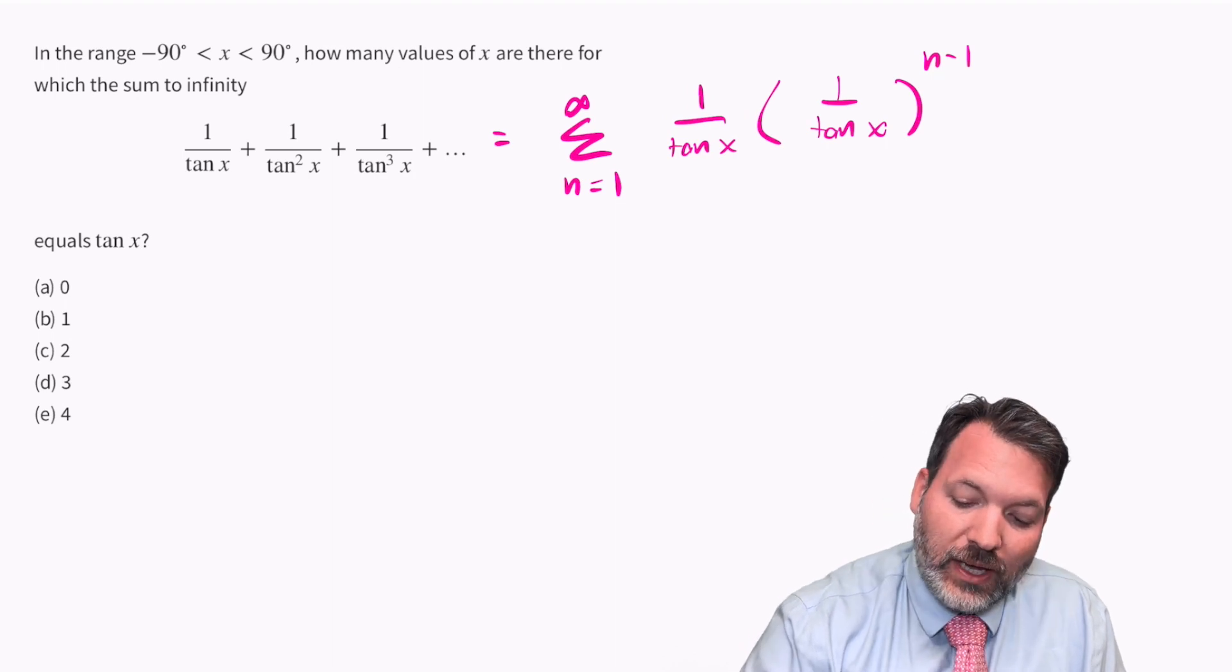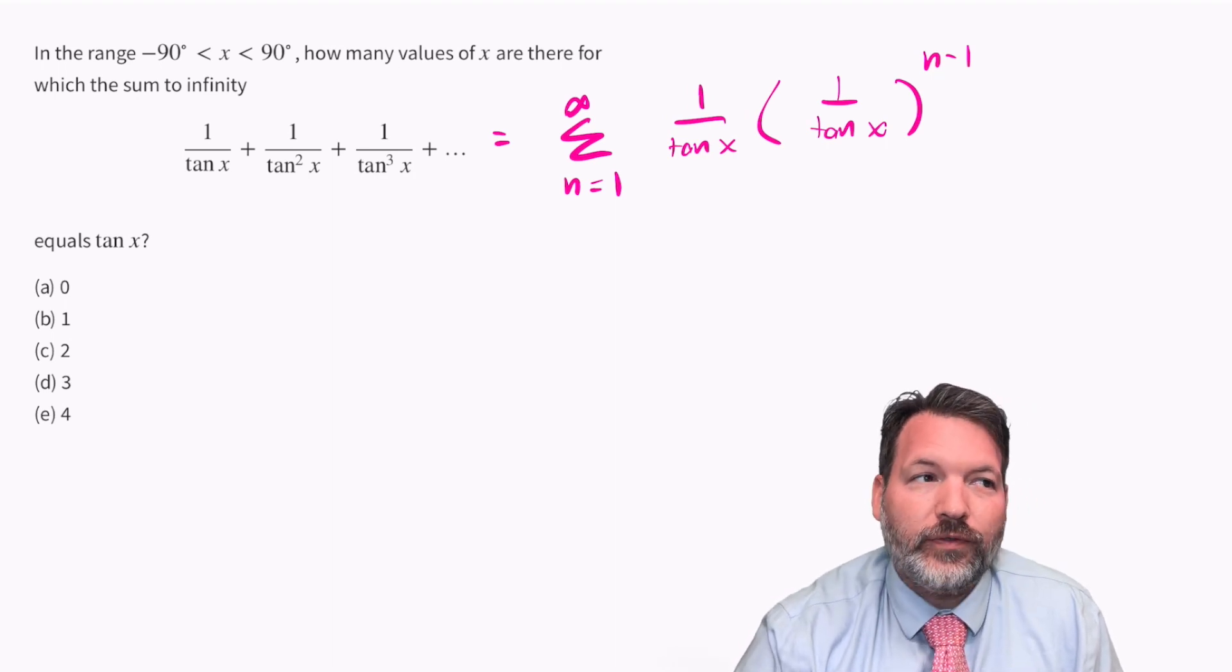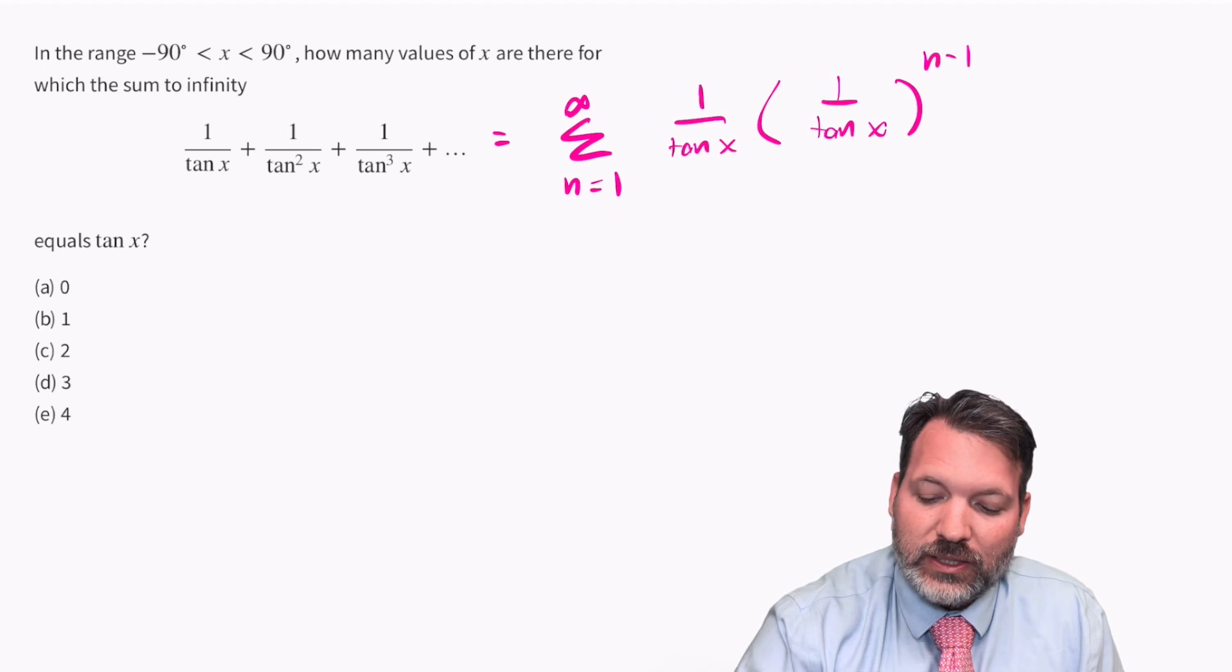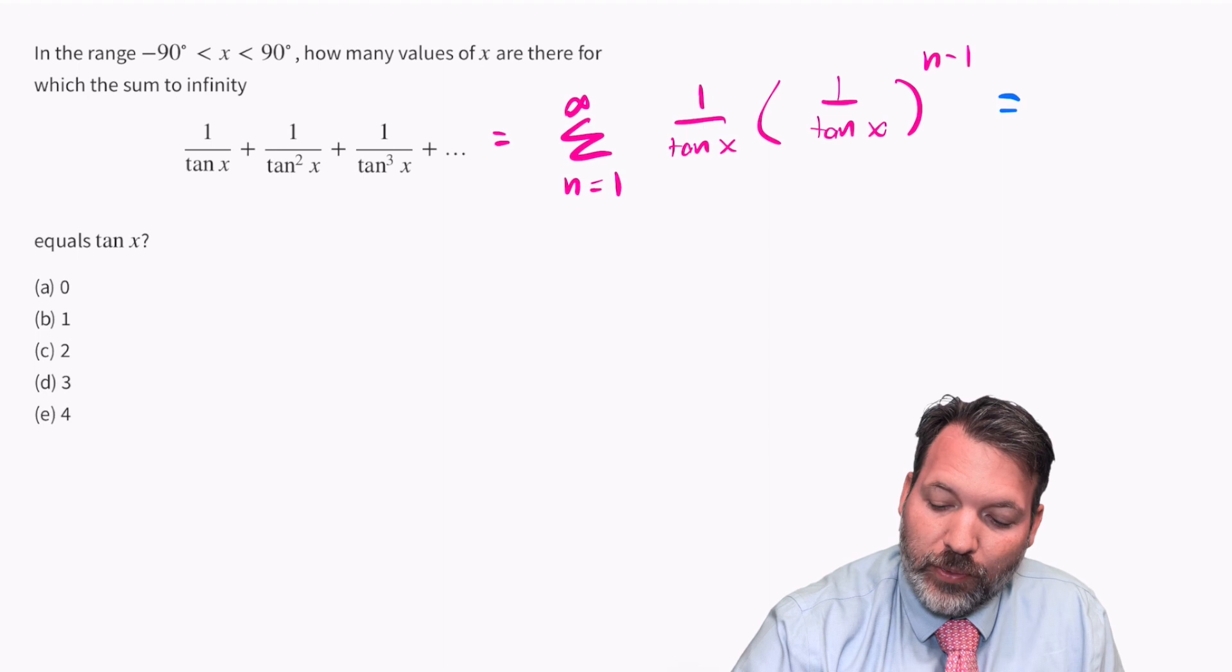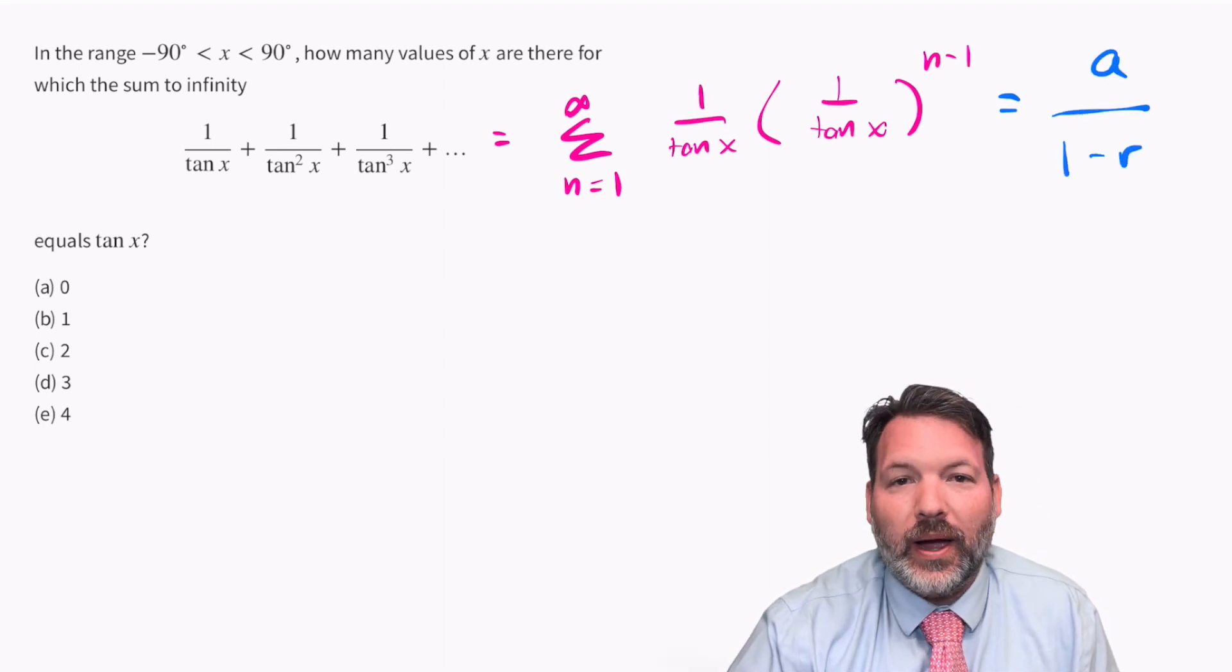The reason this is useful is I can now use the formula for the sum of an infinite series to figure out what on earth is going on with this expression. In general, that formula is a, our initial value in the series, divided by one minus r.